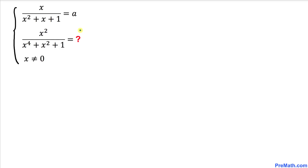Welcome to pre-math. In this video tutorial we have a system of equations. The very first equation is: x divided by x² + x + 1 equals a. Find the value of x² divided by x⁴ + x² + 1 in terms of a, where x is not equal to 0. Let's get started with the solution.